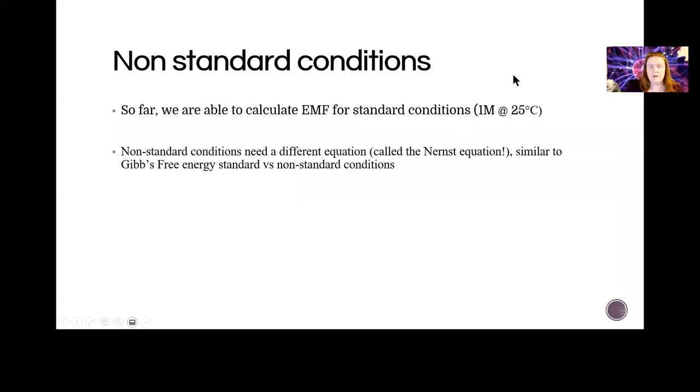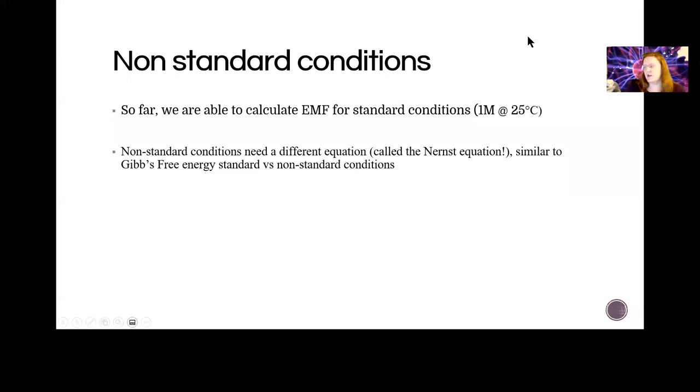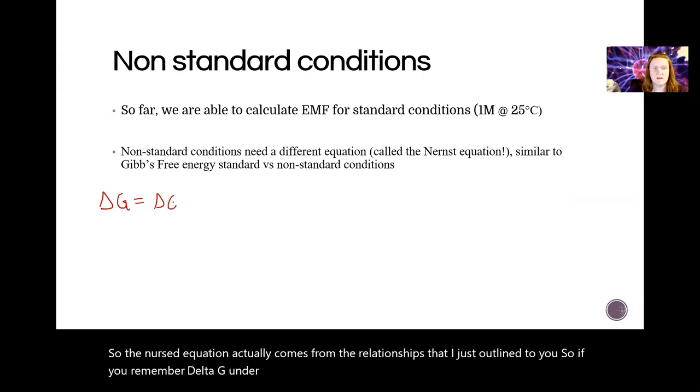Okay, just a little bit more to go. So if we have non-standard conditions, we're going to have to use something called the Nernst equation to calculate our EMF, our E cell. So the Nernst equation actually comes from the relationships that I just outlined to you. So if you remember,